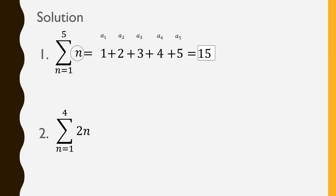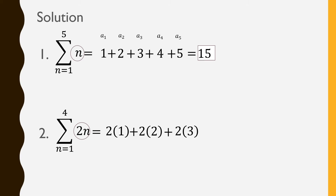For our next summation notation, this is the sum of 2n as n goes from 1 up to 4. This expression means we are going to get the sum of all values of 2n starting from 1 and ending with 4. Since it is 2n, it means 2 times n. So we have 2 times 1, plus 2 times 2, plus 2 times 3, and then the last n is 4, so we have 2 times 4.